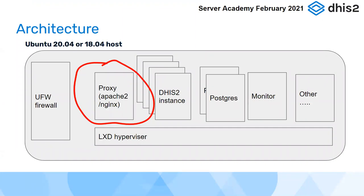This is where we are in the architecture. We talked initially about the express database server, and we spent a good bit of time yesterday talking about Tomcat - that's running the DHIS2 instance and how to do basic operations with it. This morning we're looking at the front end of the system, the proxy or reverse proxy server. In my diagram I've said Apache 2 slash nginx - there are actually quite a number of different options one can use for the proxy.